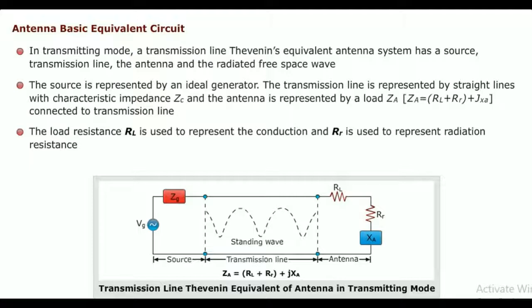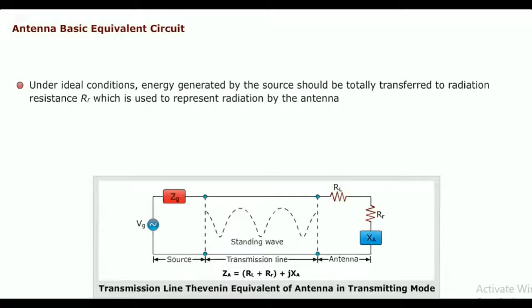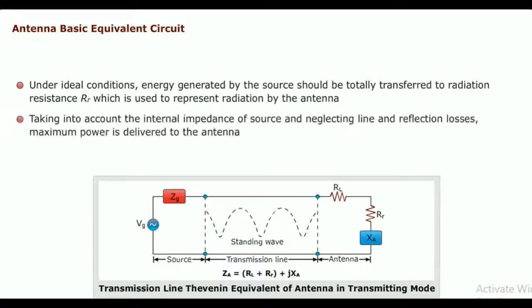The load resistance RL is used to represent the conduction loss and RR is used to represent radiation resistance. Under ideal conditions, energy generated by the source should be totally transferred to radiation resistance RR, which is used to represent radiation by the antenna.